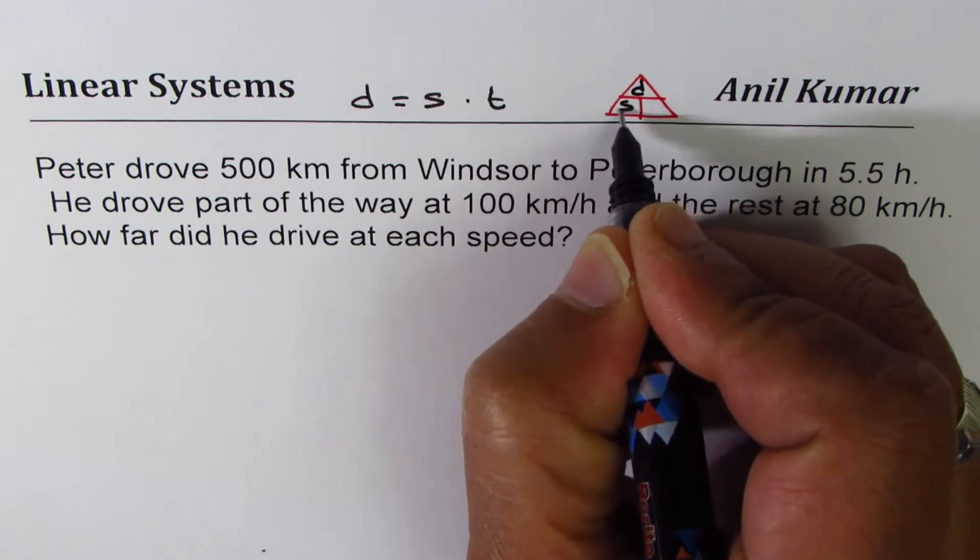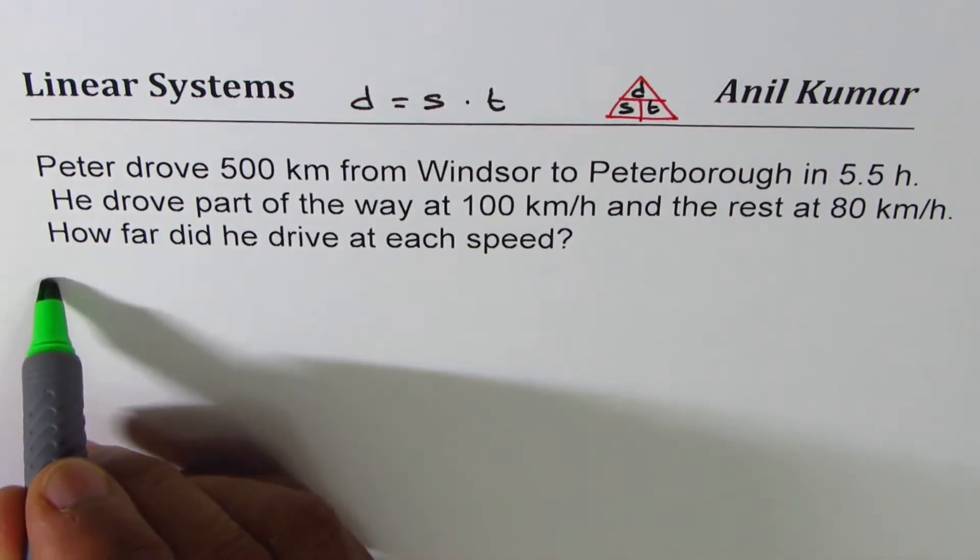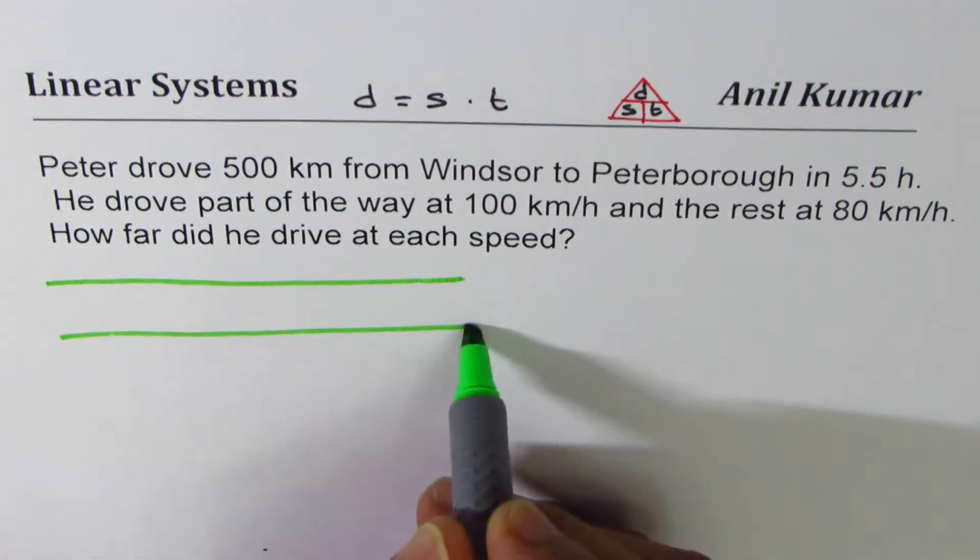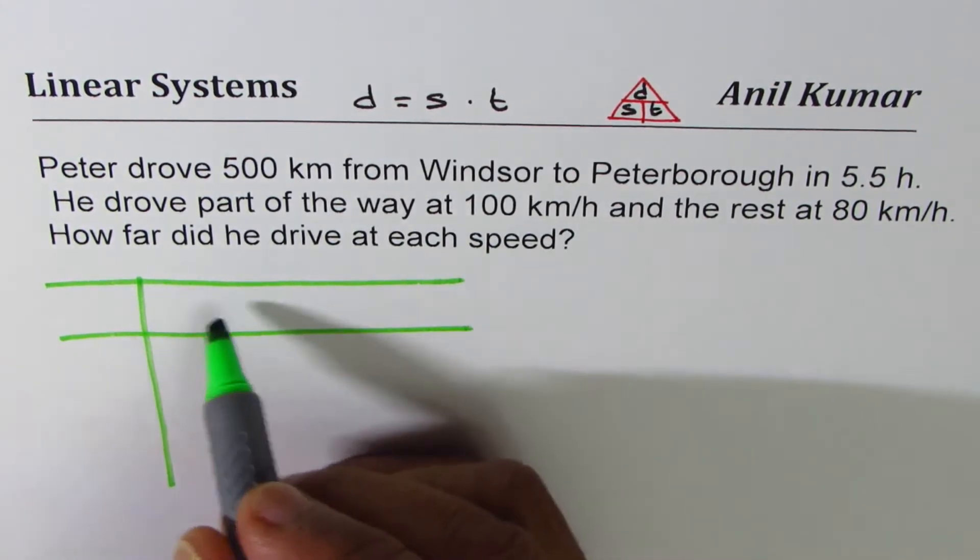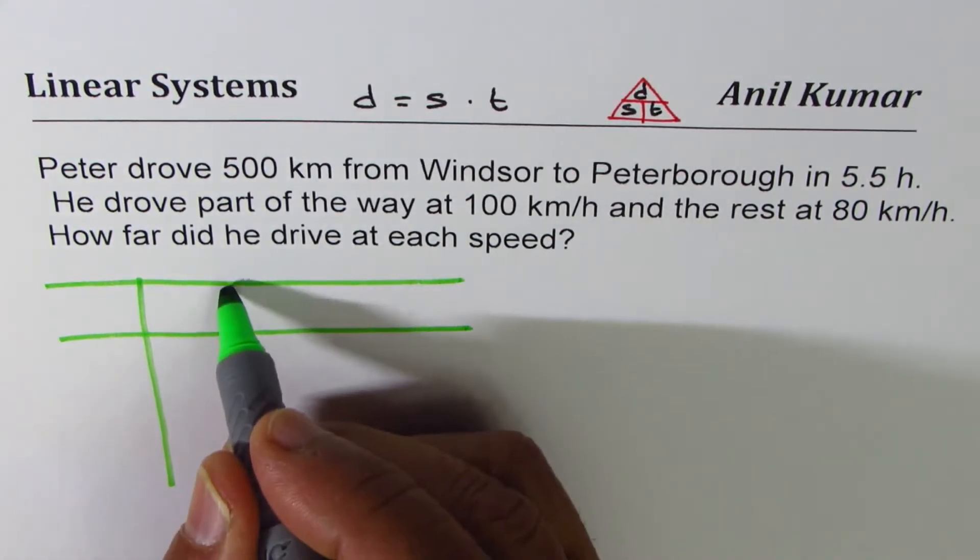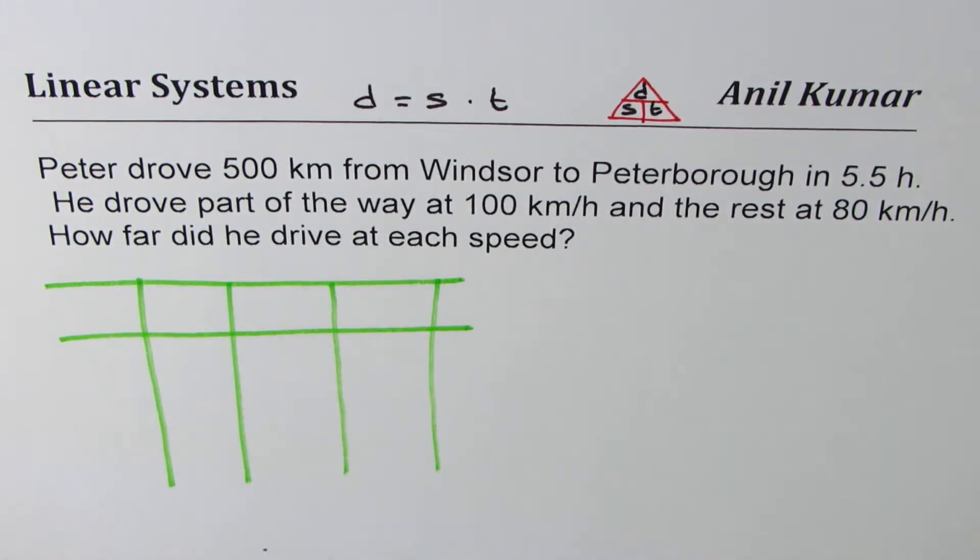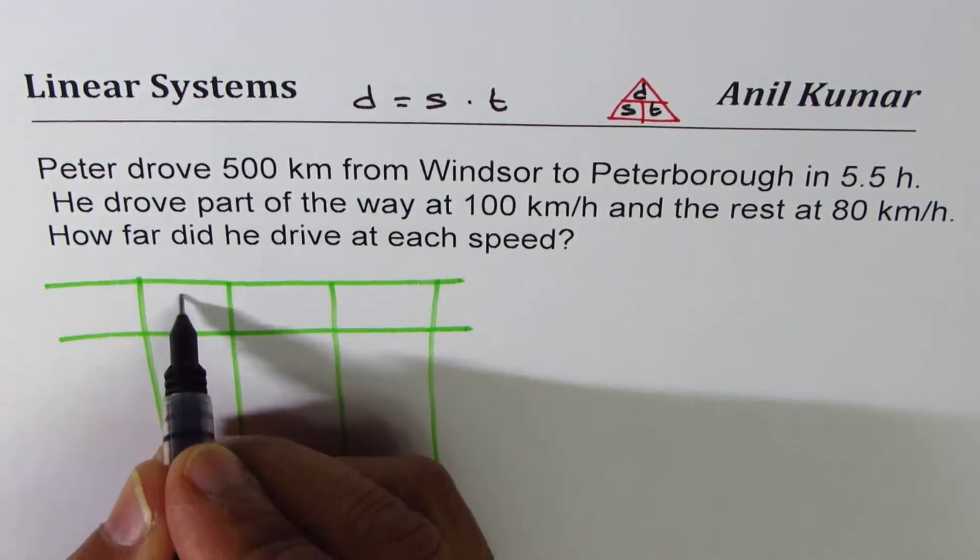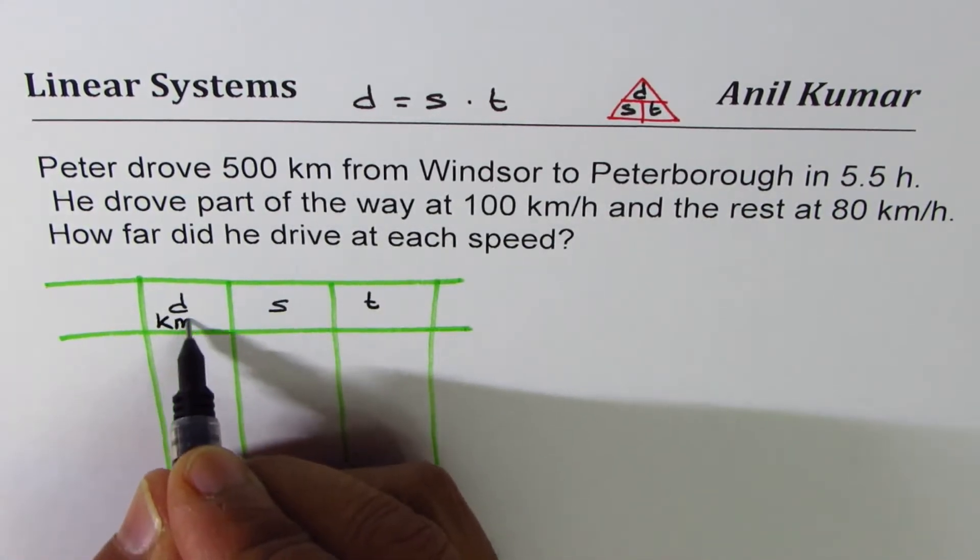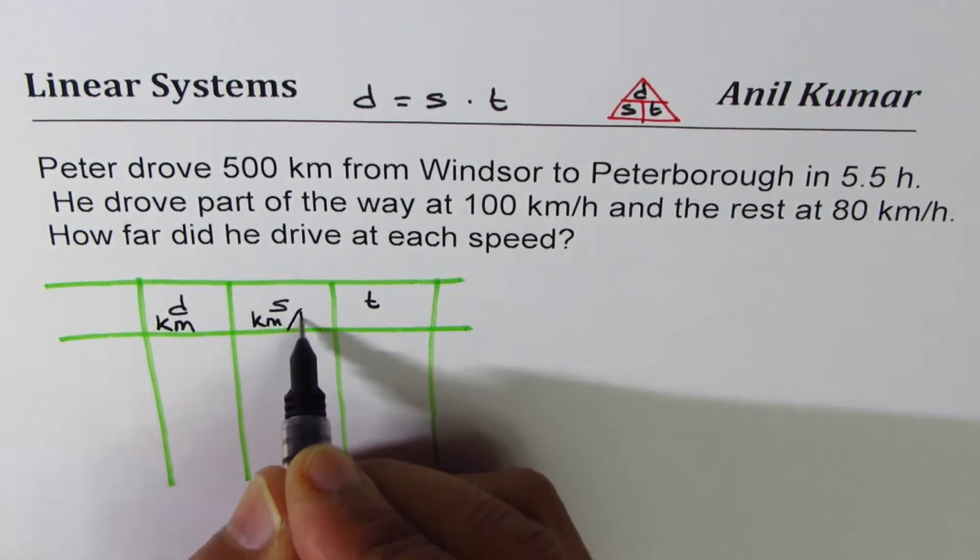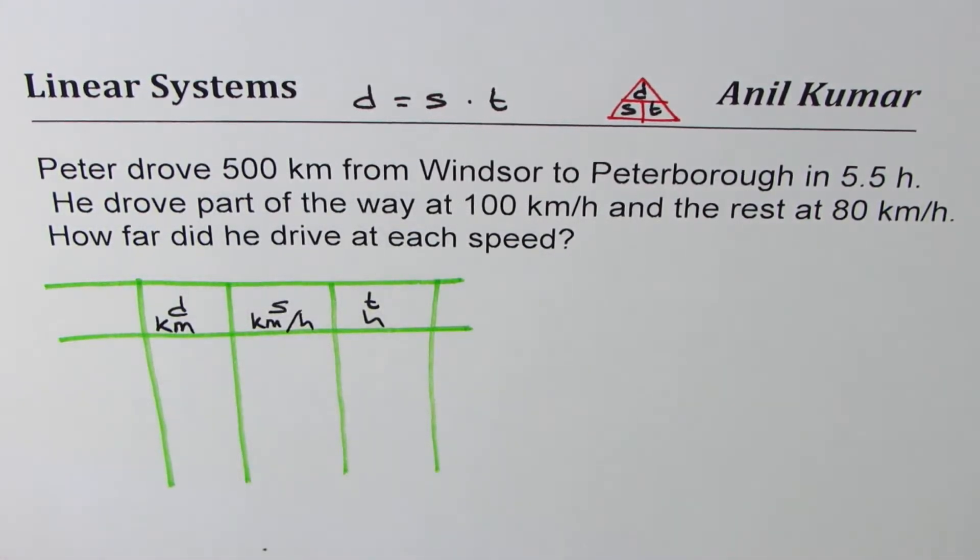I prefer to make a table of values to answer distance-speed-time questions. We'll make four columns: one for the activity, the other three for distance, speed, and time. Distance is in kilometers, speed is in kilometers per hour, time is in hours.